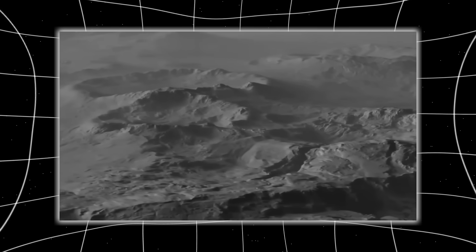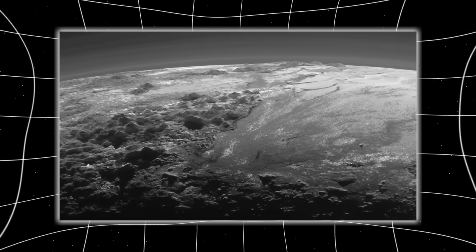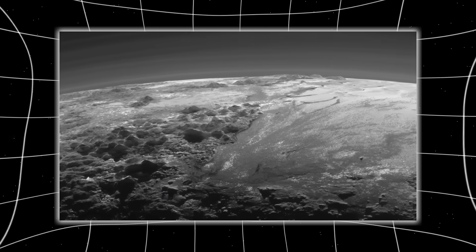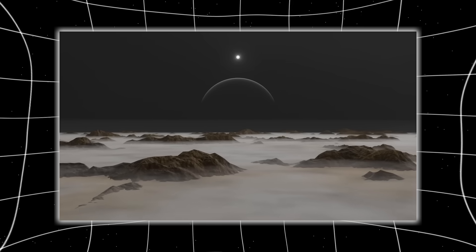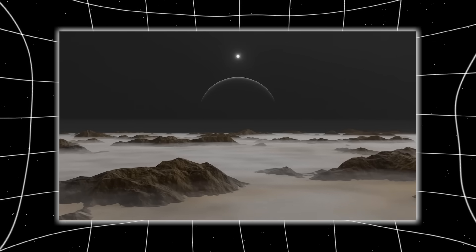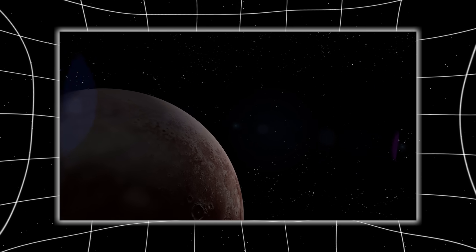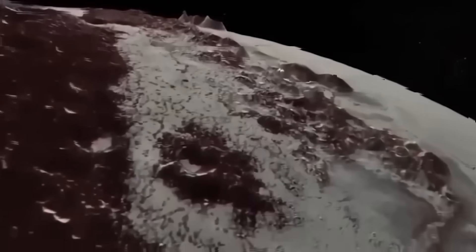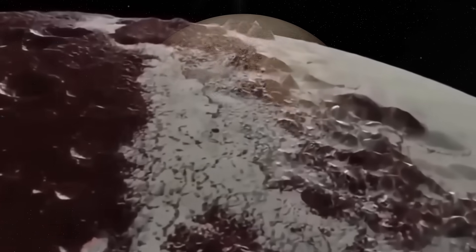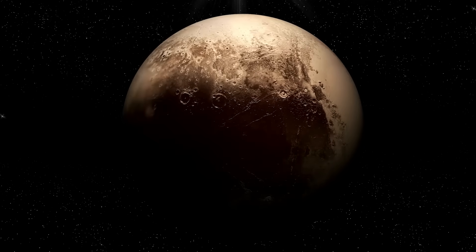Pluto's infrared glow was stronger than expected, far too strong to come from its frozen surface alone. Something above it was radiating extra heat into space. When the team subtracted Charon's contribution and isolated Pluto's atmosphere, the results were undeniable. The spectral lines matched exactly what Zhang's theory predicted six years earlier.